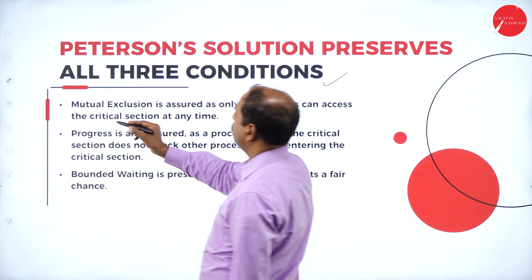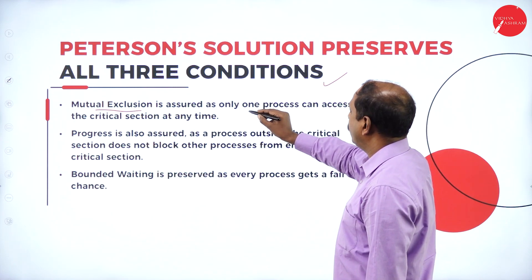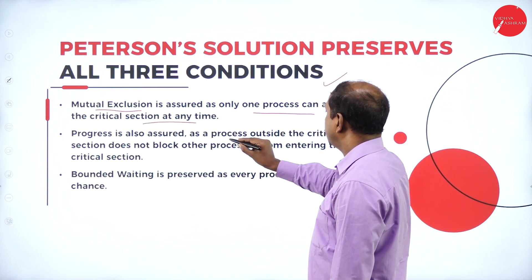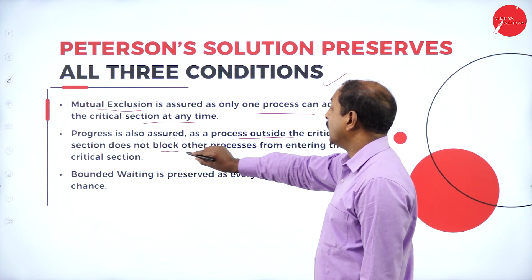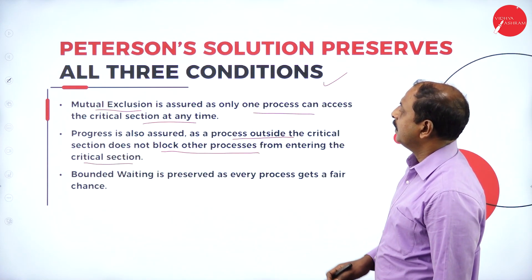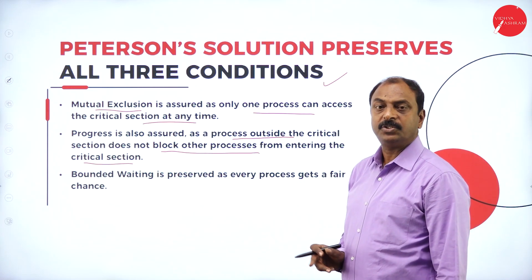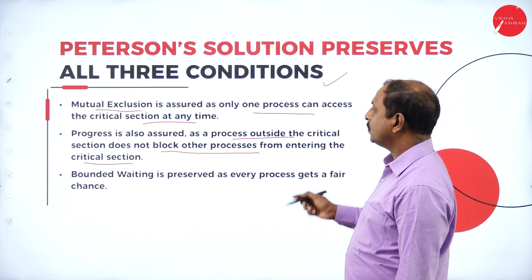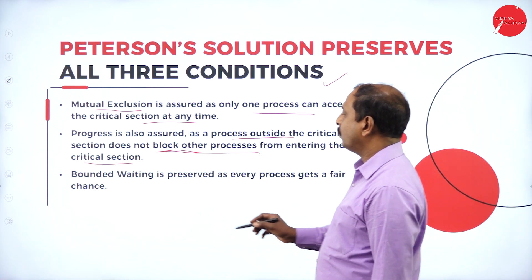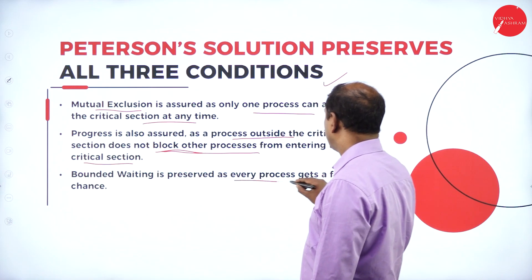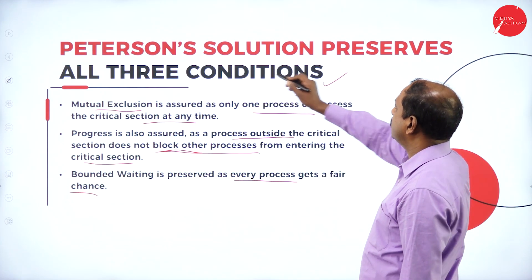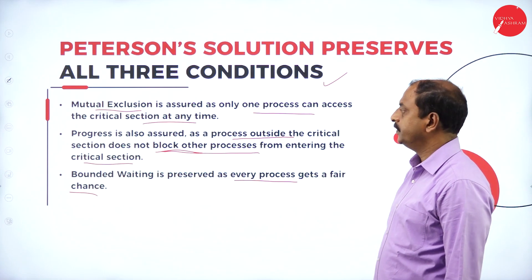The three conditions in Peterson's solution are: mutual exclusion — only one processor can access the critical section at a time; progress — a process outside the critical section does not block other processors from entering the critical section, so processors not executing in the critical section will not block others from entering; and bounded waiting — every process gets a fair chance. These are the conditions fulfilled by Peterson's solution for the critical section problem.